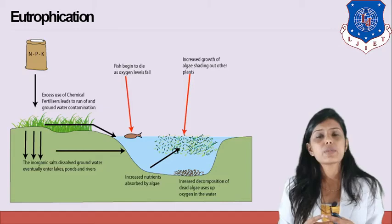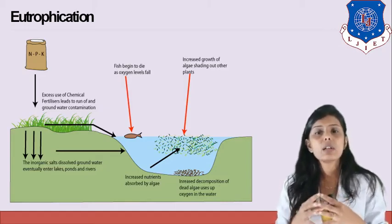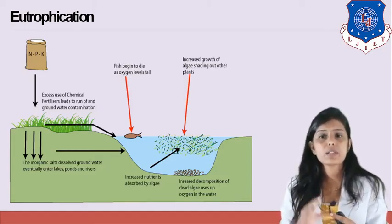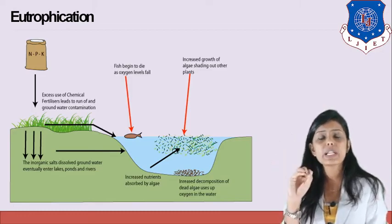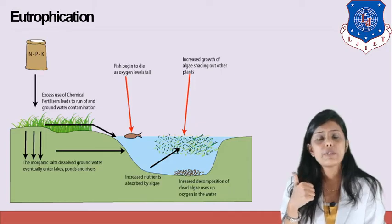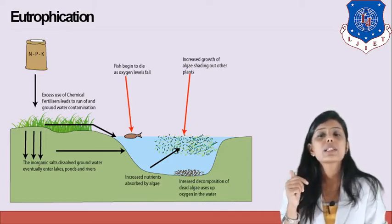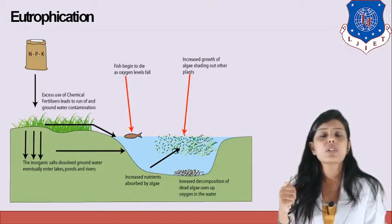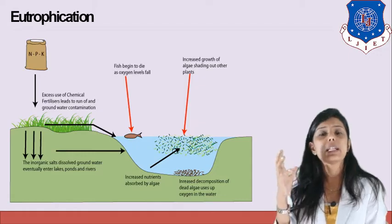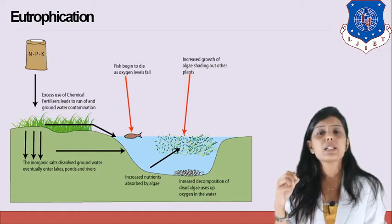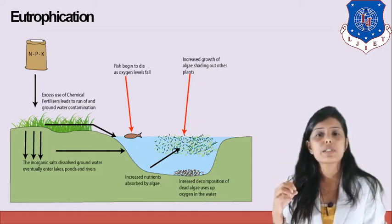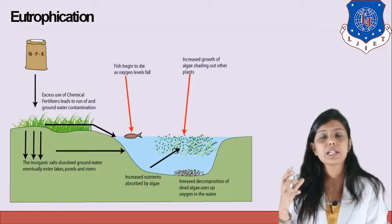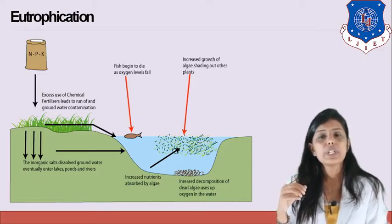The death of aquatic plants and animals further lowers dissolved oxygen in the water, thereby destroying the whole lake — that is the eutrophication process. As you can see in the figure, the whole process is explained: fertilizers cause algae growth, algae is decomposed by bacteria, dissolved oxygen concentration lowers, and fish and aquatic plants die due to the depletion of dissolved oxygen.